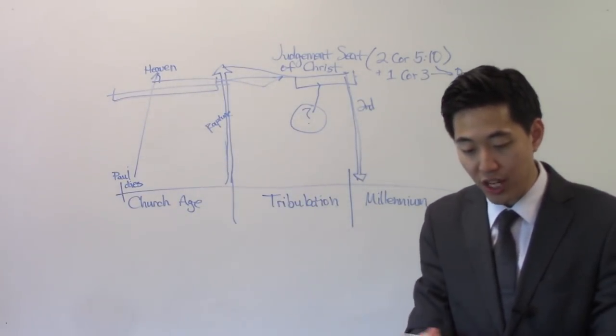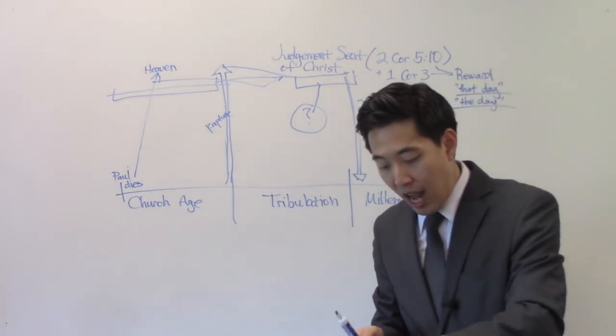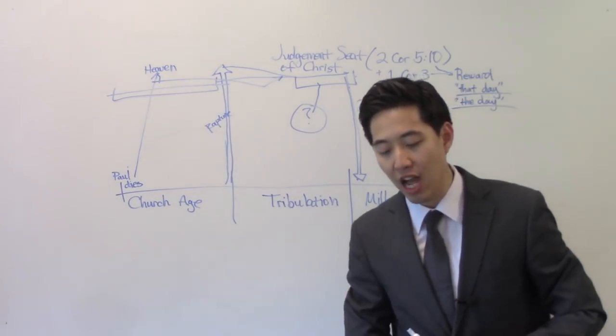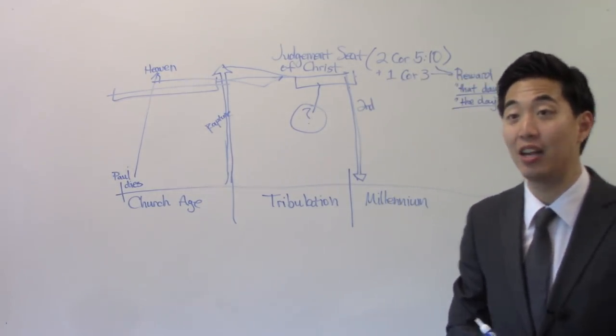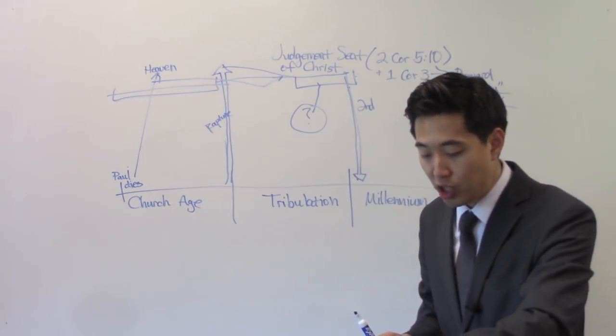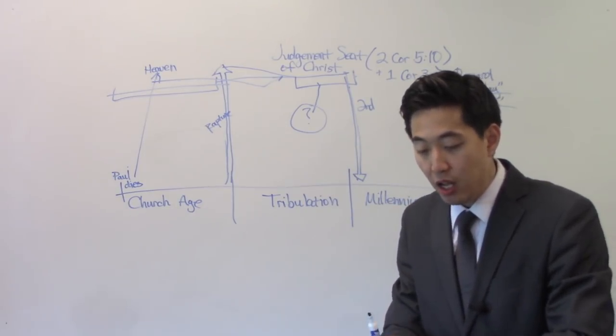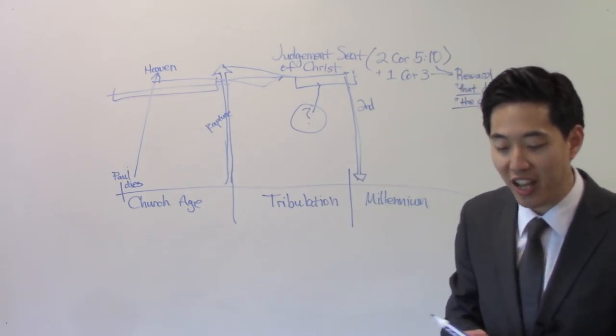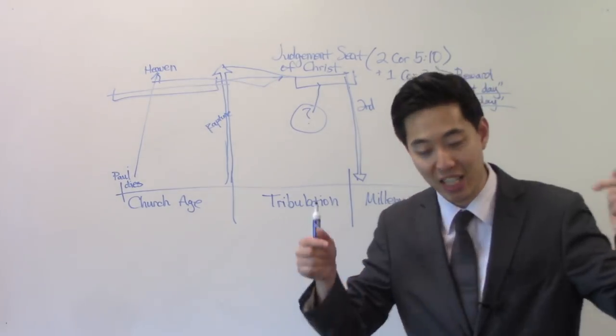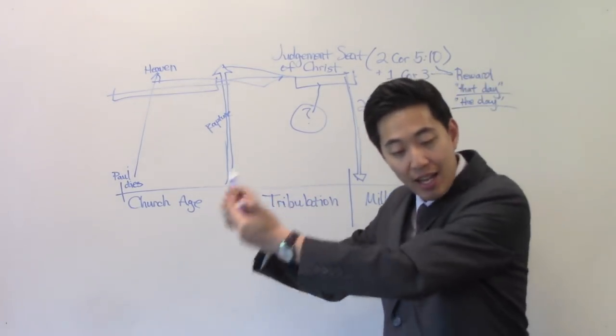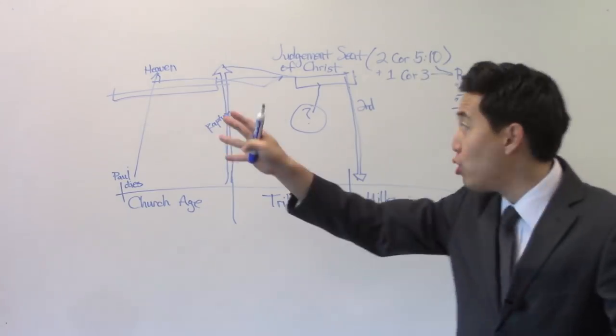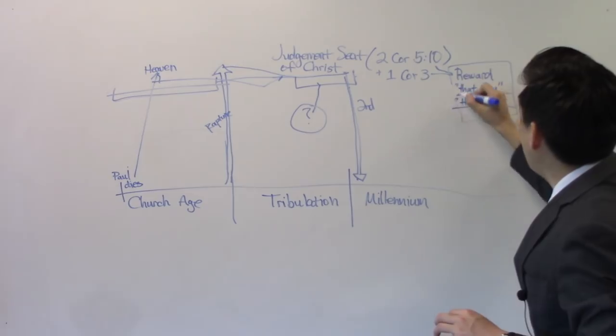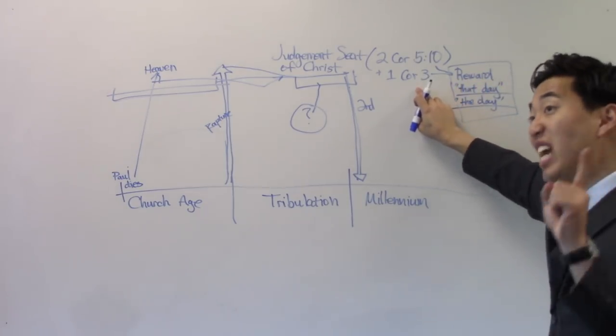Look at 2 Timothy 4, verse 8. Verse 6, For I am now ready to be offered, and the time of my departure is at hand. So he's ready to die. But look at this. Verse 8. Henceforth, there is laid up for me a crown of righteousness, which the Lord, the righteous judge, shall give me. But he didn't say present tense. He puts it at when. At that day. See? So it's a future.